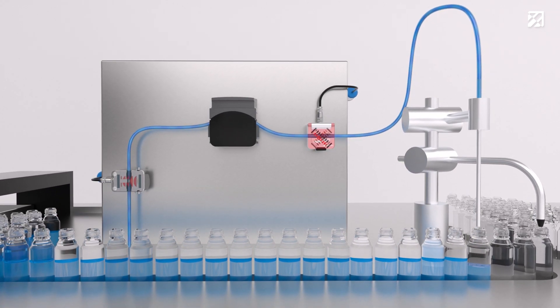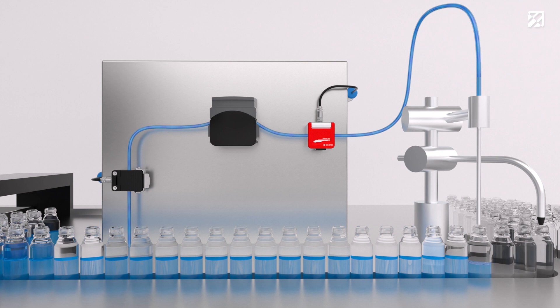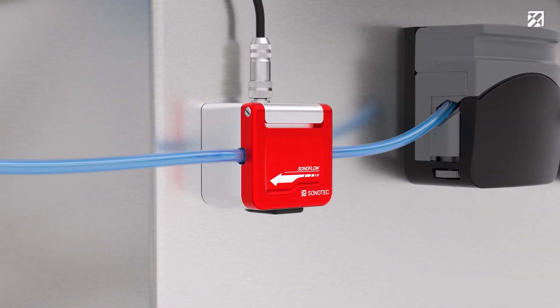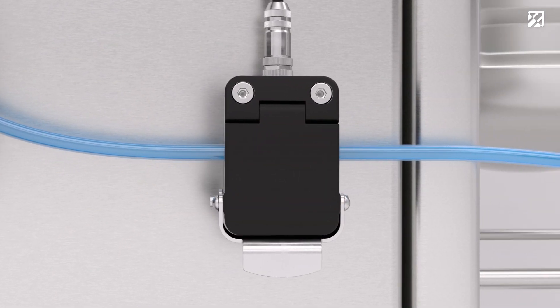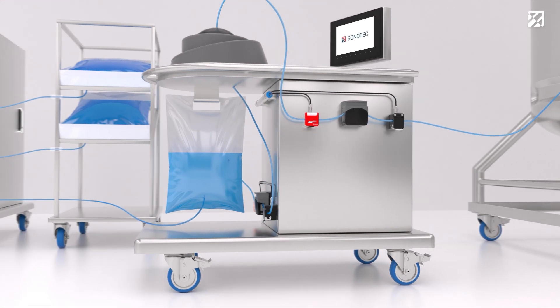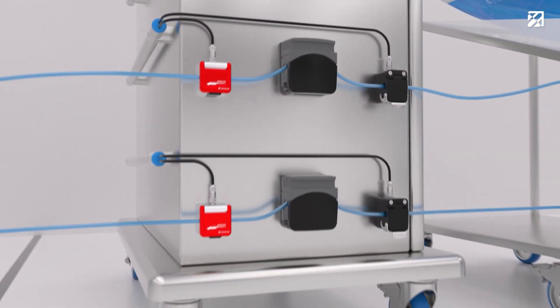You can flexibly implement non-contact flow and bubble sensors in various process steps. The clamp-on technology combines sustainability and usability. The sensors offer the smallest footprint available on the market, as the electronics board is integrated in the compact sensor housing.